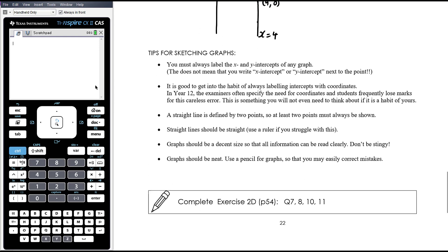Tips for sketching graphs. You must always label the x and y intercepts of any graph. It doesn't matter what the question says, that's default. You have to have enough information on your graph for someone to be able to look at your graph and work out the equation. This does not mean that you write x intercept or y intercept next to the point. You label it with its coordinates. We want to know what the location of the x and y intercepts are. It's good to get into the habit of always labeling intercepts with coordinates. In year 12, the examiners will often specify the need for coordinates, and students frequently lose marks for this careless error. It's something you won't even need to think about if you make it a habit now.